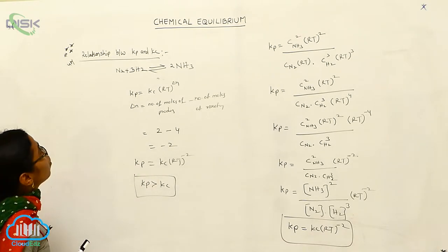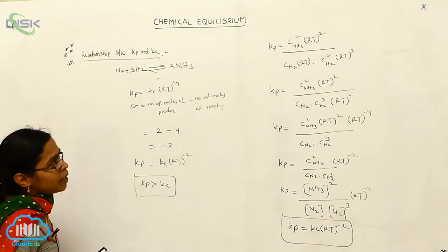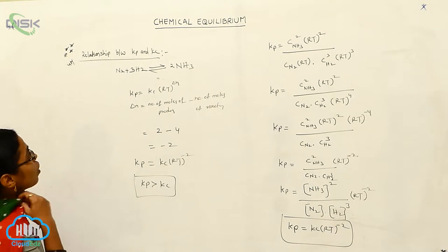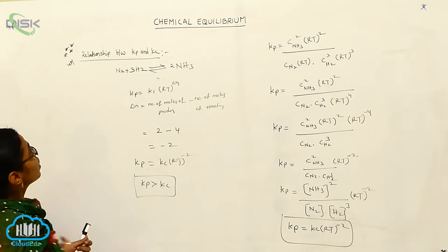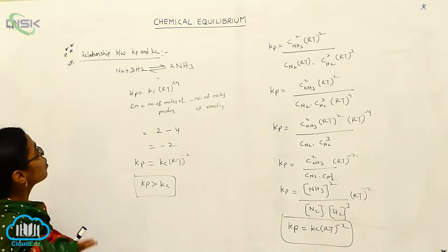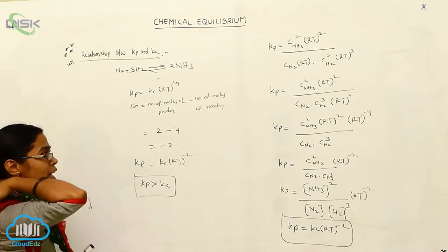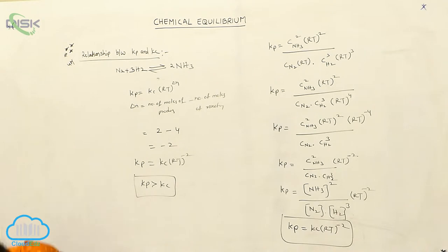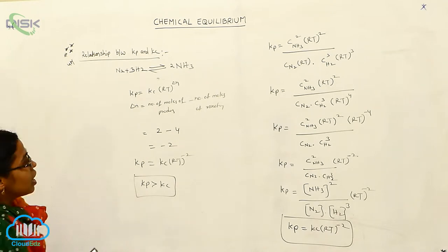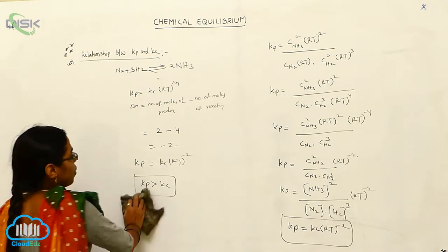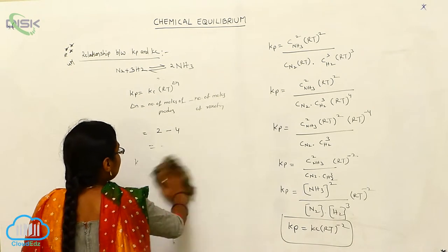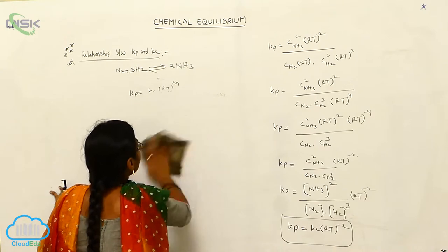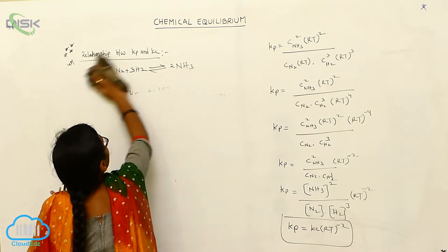It is a four-marks important question. Now we have completed the relationship between Kp and Kc. Next, one more equation — the relationship involving Gibbs energy. I think in our thermodynamics chapter, we already covered Gibbs energy.